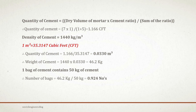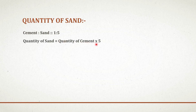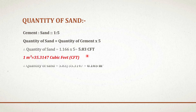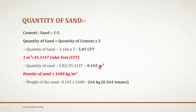Similarly, we can calculate the quantity of sand. Since cement and sand are in the ratio of 1 to 5, if you multiply the quantity of cement by 5, you get the quantity of sand. Quantity of sand equals to 1.166 multiplied by 5, which equals 5.83 cubic foot. Dividing by 35.3147 gives 0.165 cubic meter. Using a density of sand as 1600 kg per cubic meter, weight of sand equals 1600 multiplied by 0.165, which equals 264 kg, or 0.264 tons.